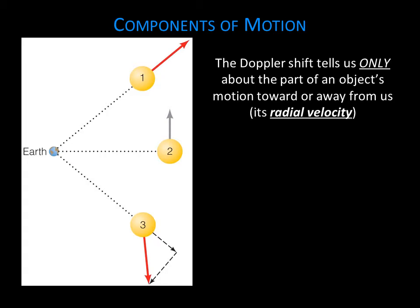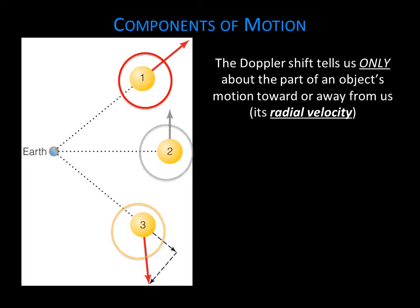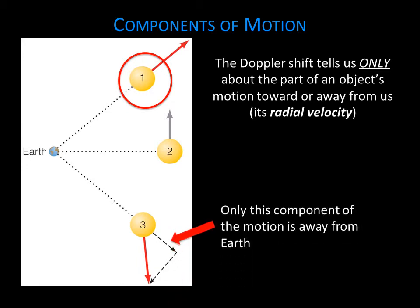The Doppler effect is limited in that it can tell us only the part of an object's full motion that is directed toward or away from us — its radial velocity. Consider three stars all moving at the same speed: one moving directly away from us, one moving across our line of sight, and one moving diagonally away from us. The Doppler shift will tell us the full speed of only the first star. It will give no speed for the second star, because none of its motion is directed toward or away from us. For the third star, the Doppler shift tells us only the component of velocity directed away from us.